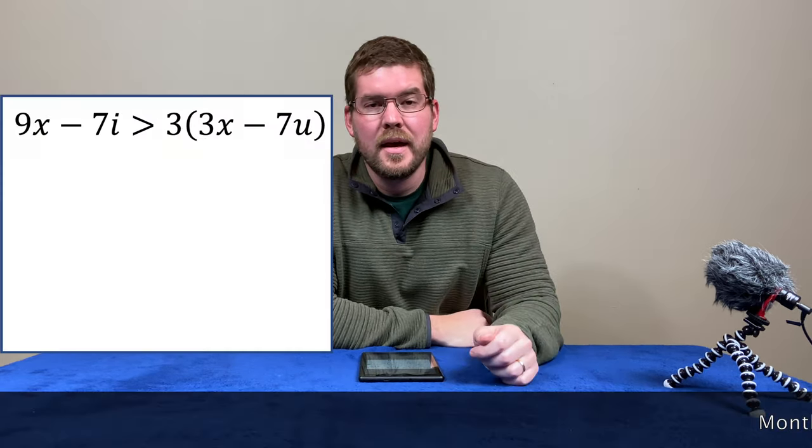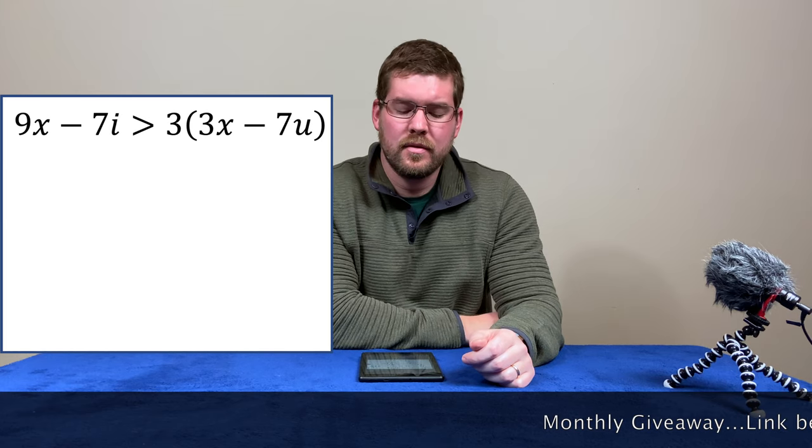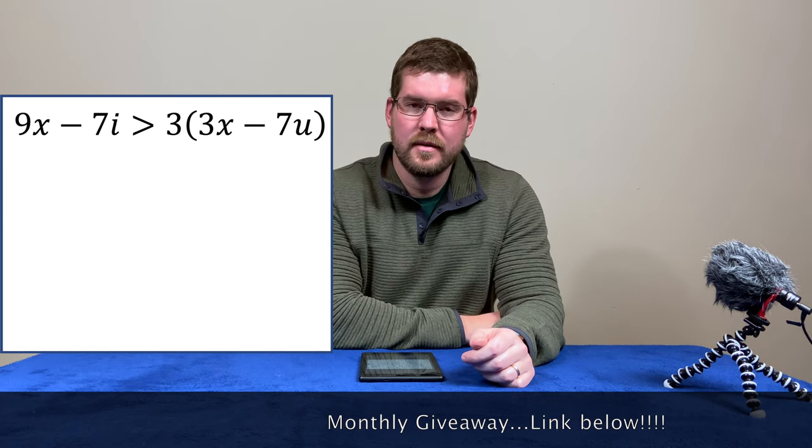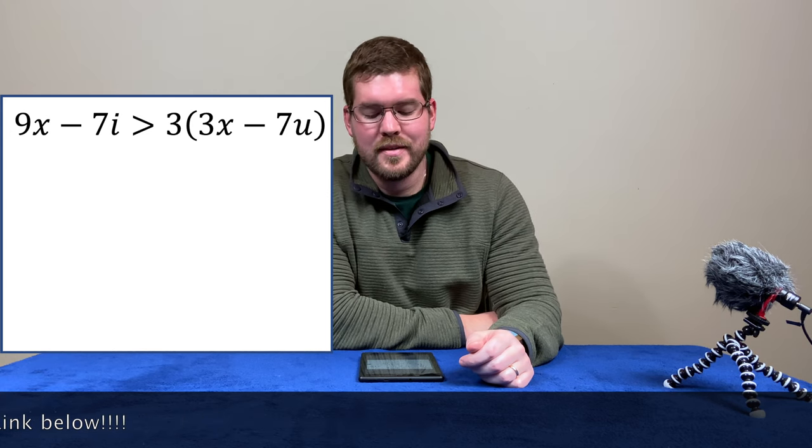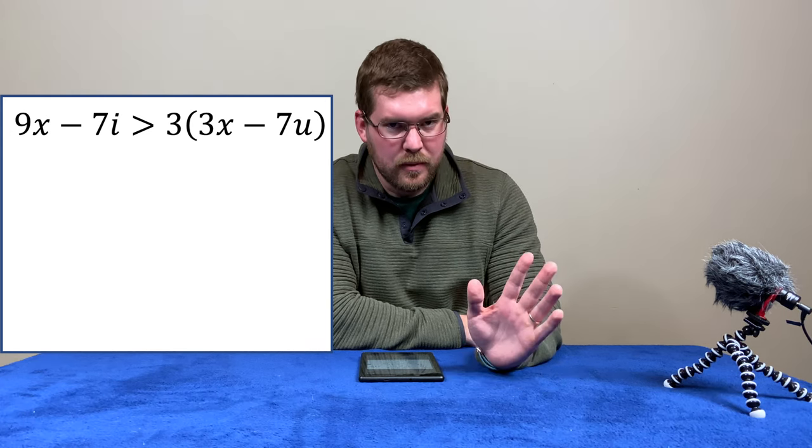So we're given this right here, inequality: 9x minus 7i is greater than 3 times 3x minus 7u, okay?